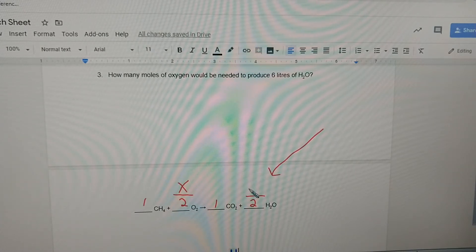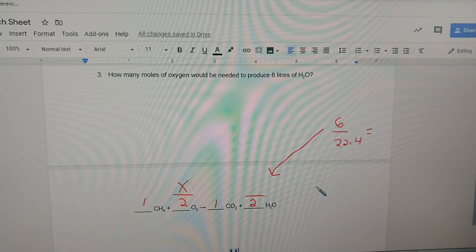How many moles of oxygen would be needed to produce six liters of water? Now I cannot put a number six here. I have to convert six liters to moles. Six divided by, what is the number for liters for moles? 22.4. This is going to give us a little more than a fourth. Six divided by 22.4, we just converted that to 0.27 moles.